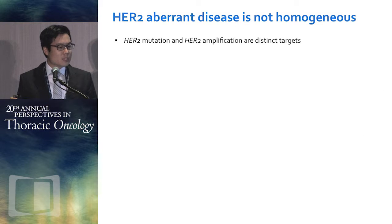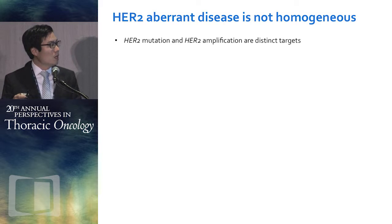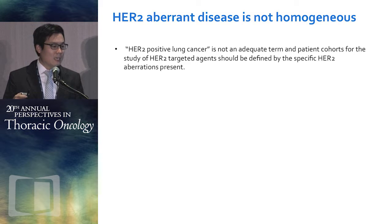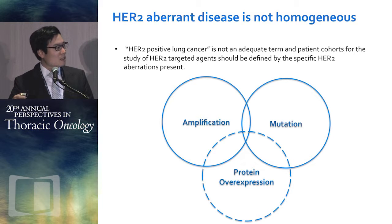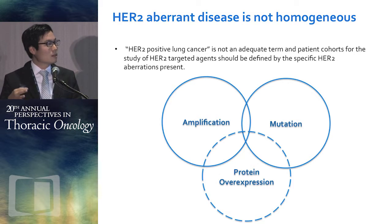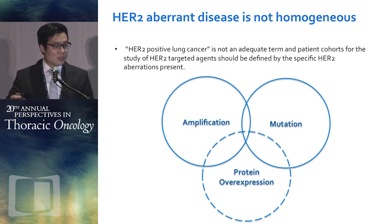For HER2, the first thing I want to mention is that HER2 aberrant disease is not a homogeneous group of patients. HER2 mutations, HER2 amplification, and HER2 protein overexpression — we've learned these are distinct targets. We have to be careful about what we mean when we say HER2-positive lung cancer. There's a little bit of overlap for all three or two out of the three, but mostly these things tend to be siloed in terms of the patients they arise in, and the responses to HER2-directed therapy have also been different.